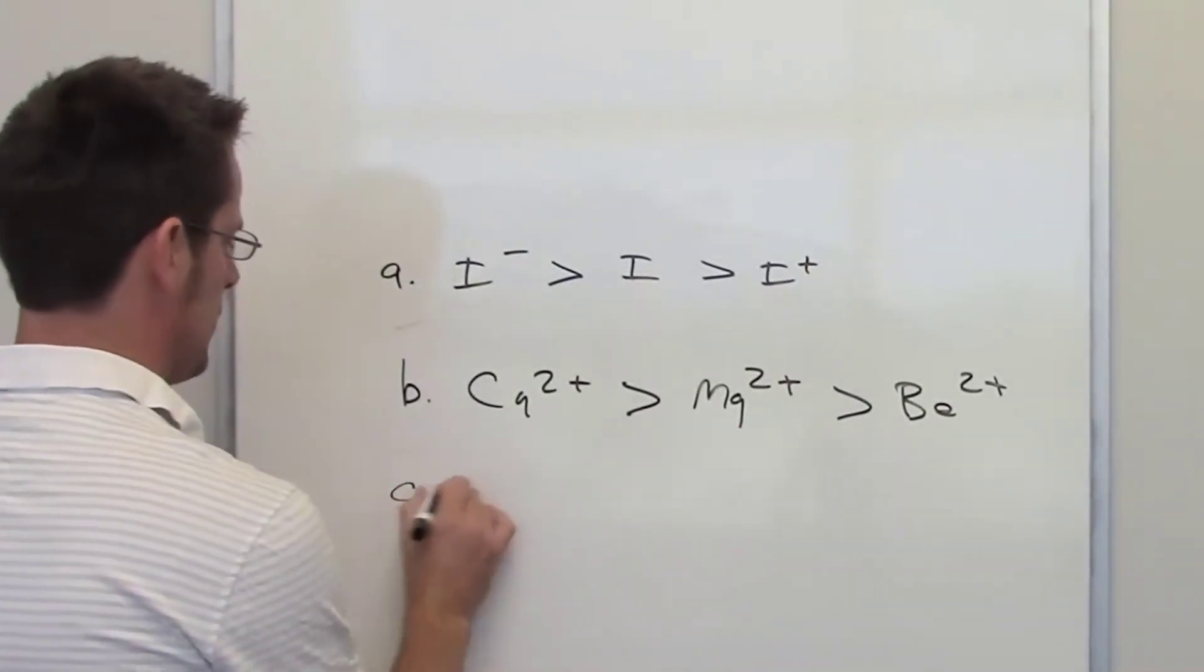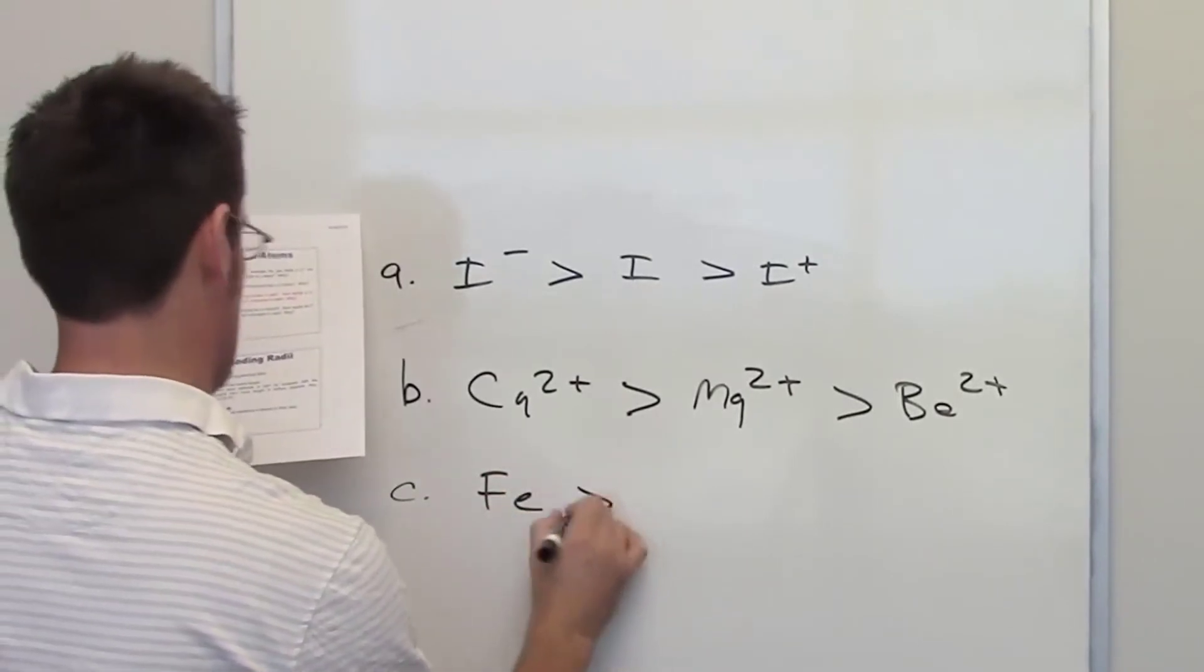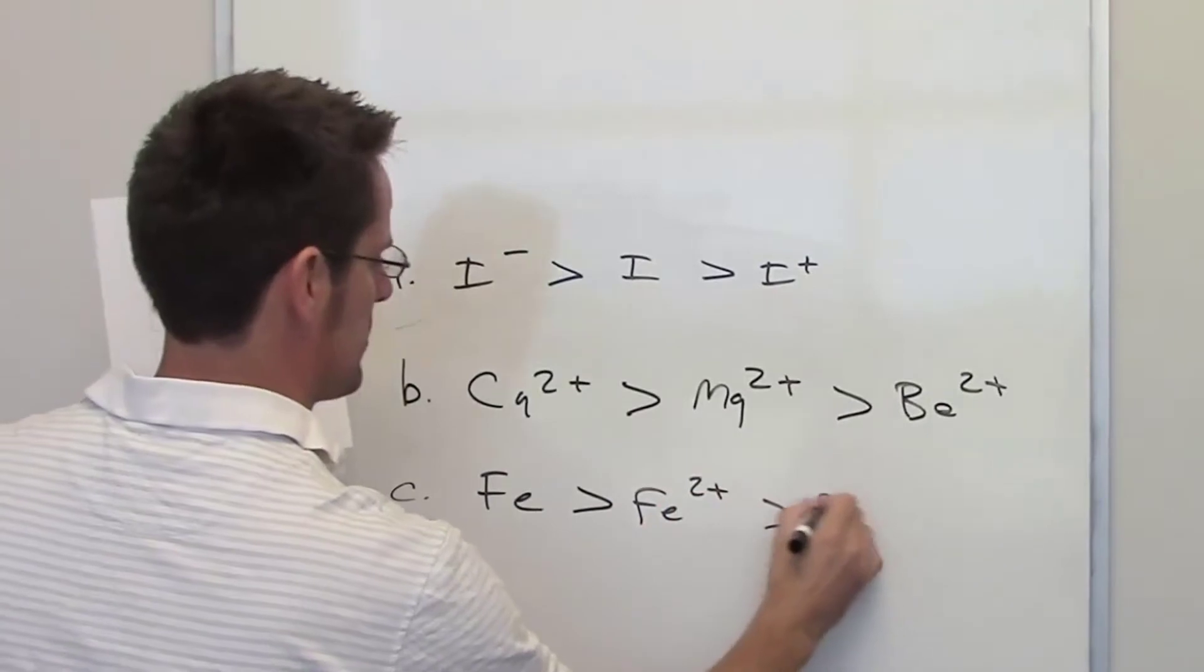In the third example, we're asked to compare different ions of iron, iron neutral to iron two plus to iron three plus.